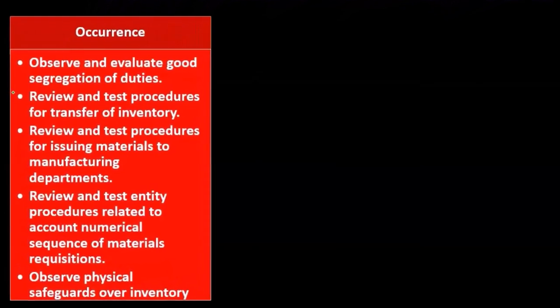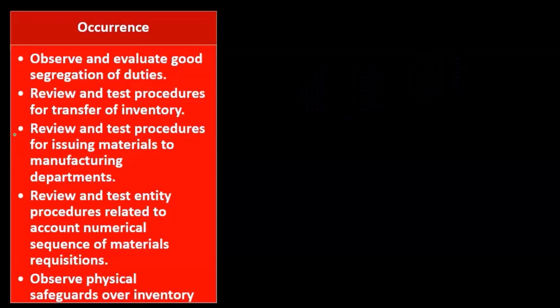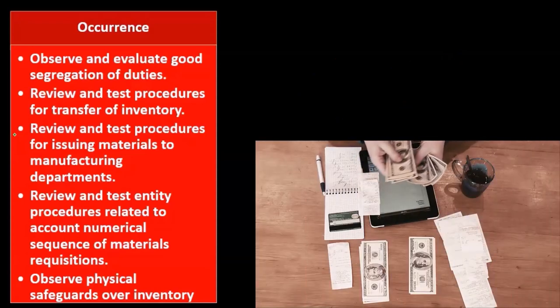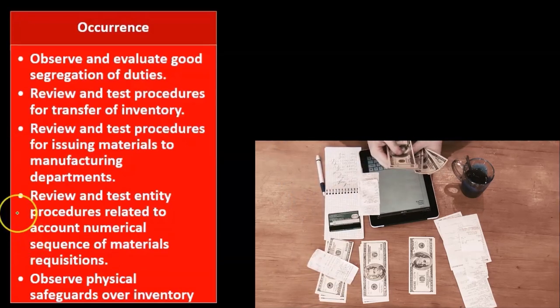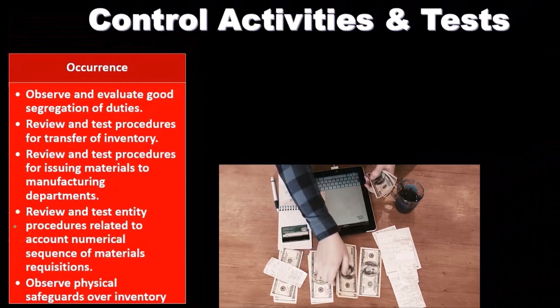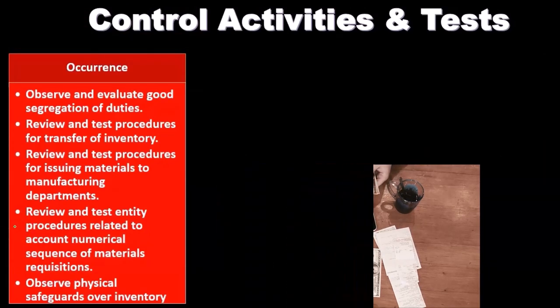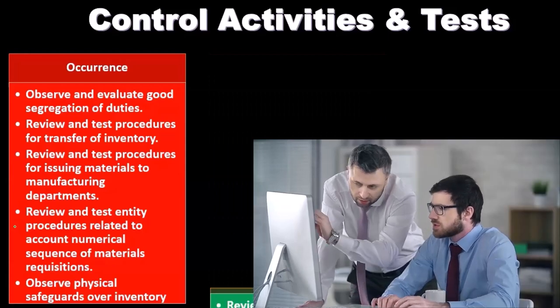We can review and test procedures for transfer of inventory and for issuing materials to the manufacturing department. These are key transaction components — things moving within the inventory system — and we want to test the controls relating to them. We also review and test entity procedures related to account number sequencing of material requisitions, which should have a pre-numbered or sequential number format. Then we observe physical safeguards over the inventory.